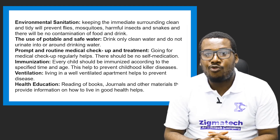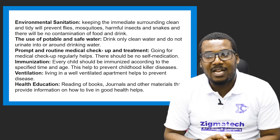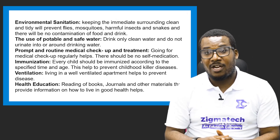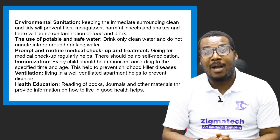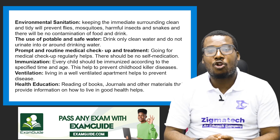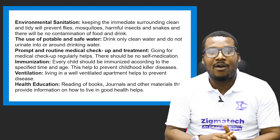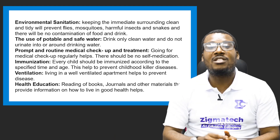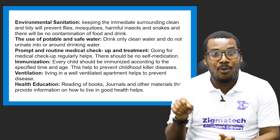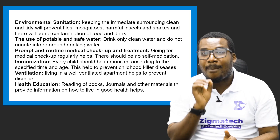The sixth method is immunization. Every child should be immunized according to the specified time and age — this helps prevent killer diseases. When a vaccine is available, ensure you take your jab. Immunization means your immune system is familiar with that pathogen's signature, so it knows exactly how to deal with it when it encounters it — just like recognizing malaria or yellow fever and knowing how to respond.